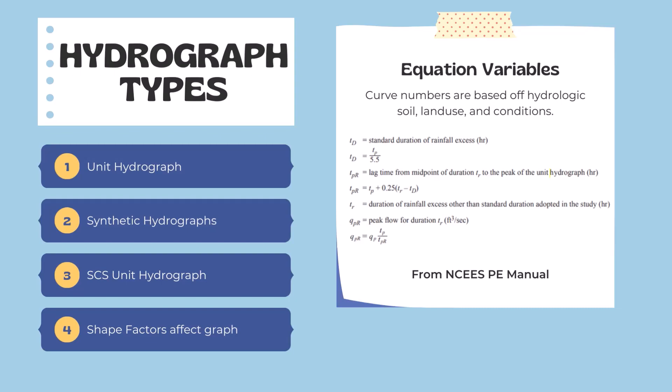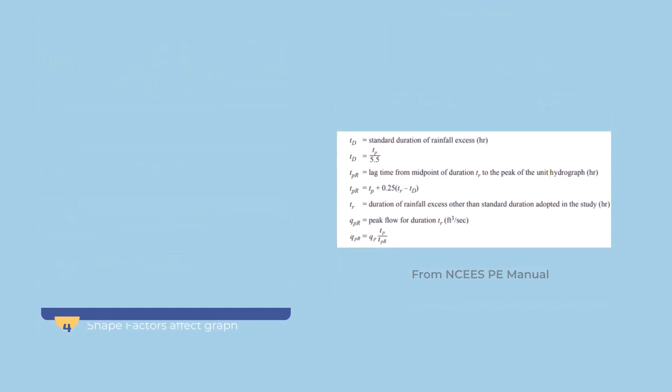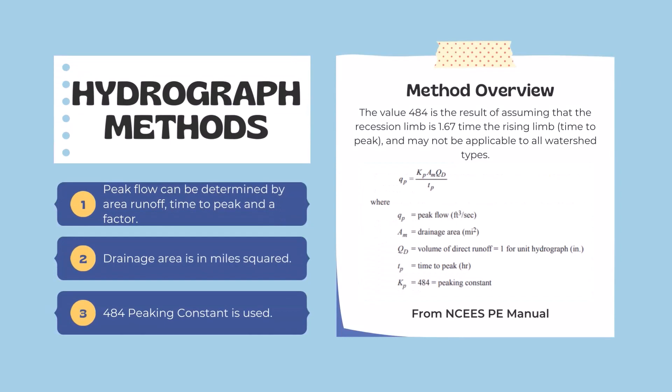For hydrograph methods, peak flow can be determined by area runoff, time to peak, and a factor. The drainage area is often in square miles and the 484 peaking constant is often used. For different areas of the country or the world, a different peaking constant may be used.